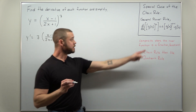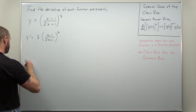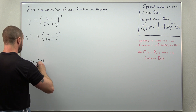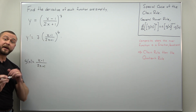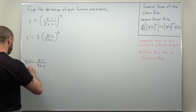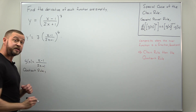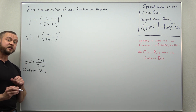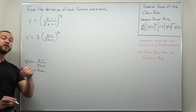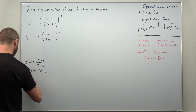Let's denote our inner function as g of x, which is the fraction: x minus 1 divided by 2x plus 1. We're going to calculate the derivative of g using the quotient rule. At this point in your Calculus 1 course, for a simple function like this, you're probably okay calculating the derivative with the quotient rule as you go, so let's go ahead and do that to calculate g prime.